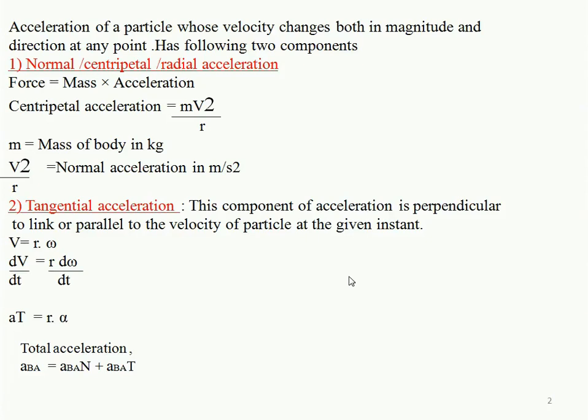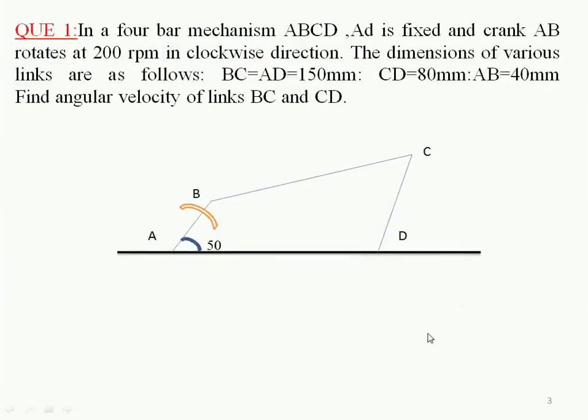The total acceleration is the summation of normal and tangential acceleration. Now we will move to the first numerical. The question is: in a four-bar mechanism ABCDA, AD is the fixed link and crank AB is rotating at 200 RPM in the clockwise direction. The dimensions are: BC = AD = 150 mm, CD = 80 mm, AB = 40 mm. Find the angular velocity of links BC and CD.